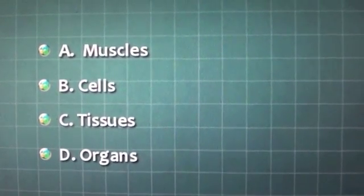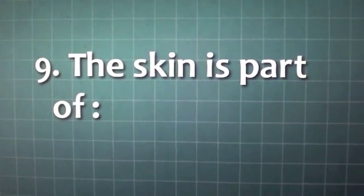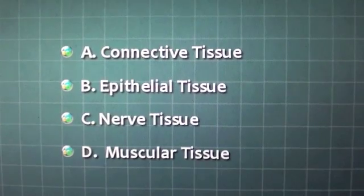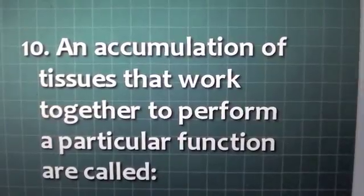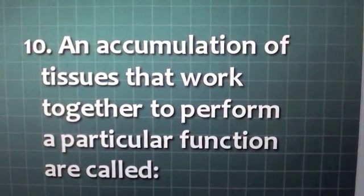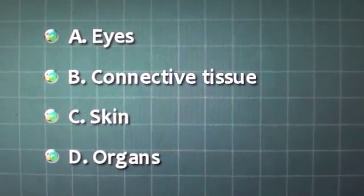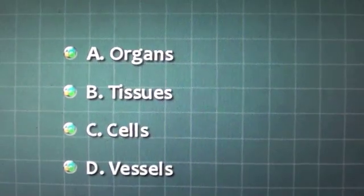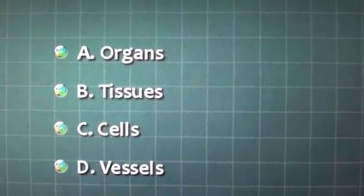A bunch of cells that work to perform a specific function are called: A. Muscles, B. Cells, C. Tissues, D. Organs. The skin is part of: A. Connective tissue, B. Epithelial tissue, C. Nerve tissue, D. Muscular tissue. An accumulation of tissues that work together to perform a particular function are called: A. Connective tissue, C. Skin organs. Systems are made of a group of: A. Organs, B. Tissues, C. Cells, D. Vessels.